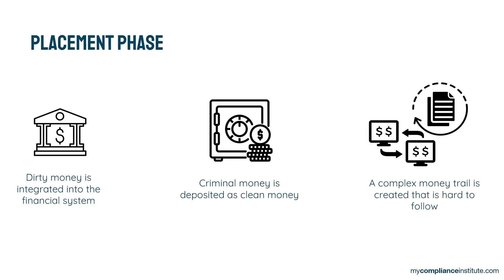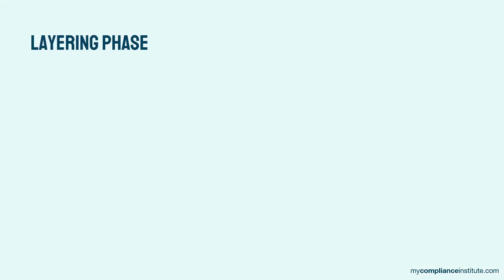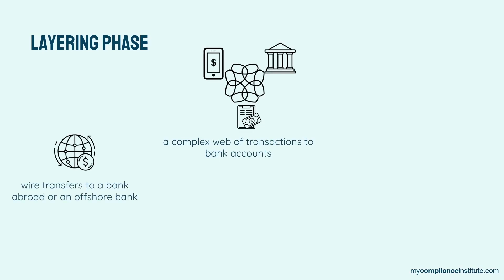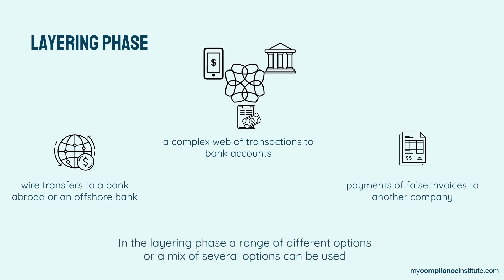This is called layering. Layering involves, for instance, a complex web of transactions to bank accounts, wire transfers to a bank abroad, offshore bank payments, or false invoices to another company. In the layering phase, a range of different options or a mix of several options can be used, depending on the creativity and professionalism of the criminal in question.